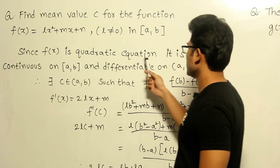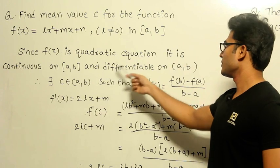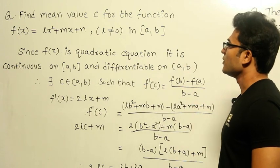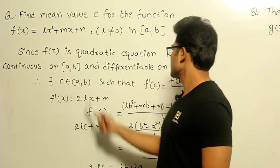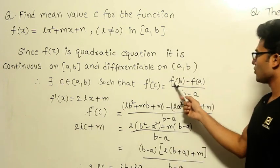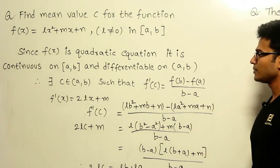Since f(x) is a quadratic equation, it is continuous on [a,b] and differentiable on (a,b). Which means there should exist a point C such that f'(C) = [f(b) - f(a)]/(b - a).